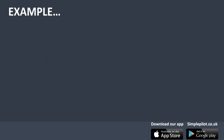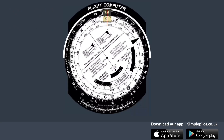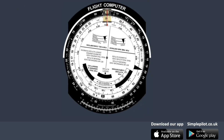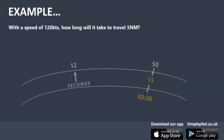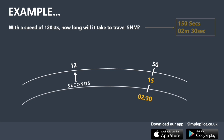Let's see an example. With a speed of 120 knots, how long will it take to travel 5 nautical miles? Since the distance is relatively short, we will use the seconds index to determine the time. We align the seconds index with the number 12, representing 120 knots on the outer scale. Then look for the distance of 5 miles, represented by the number 50 on the outer scale. We read the corresponding time in seconds on the middle scale and in minutes on the inner scale — the results are 150 on the middle scale and 230 on the inner scale, interpreted as 150 seconds or 2 minutes and 30 seconds.